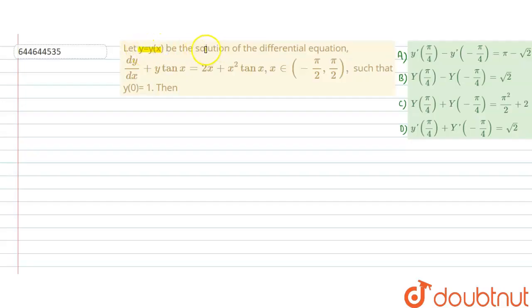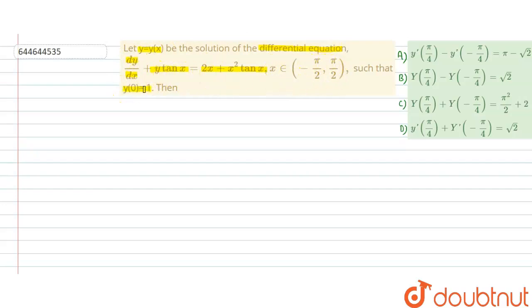Hello students. The given problem: y = y(x) is the solution of the differential equation dy/dx + y·tan(x) = 2x + x²·tan(x), where x belongs to (-π/2, π/2), and the initial condition is y(0) = 1, meaning x = 0 when y = 1.